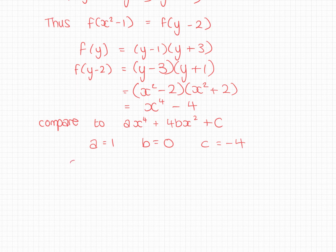And then we're simply asked to say, what is a squared plus b squared plus c squared? If I square each of these, a squared is 1, 0, minus 4 squared is 16. 1 plus 0 plus 16. The answer is 17.